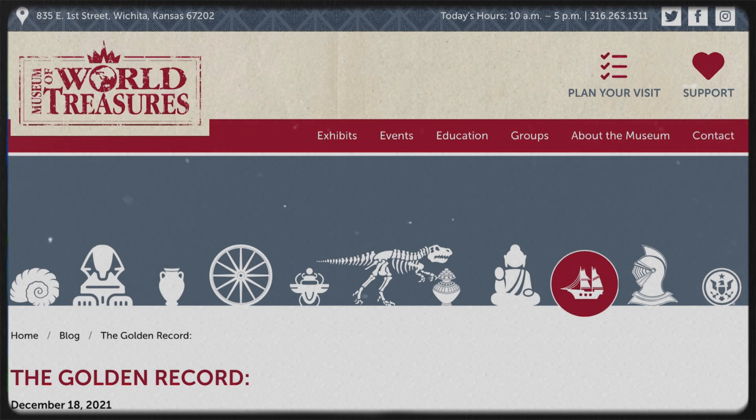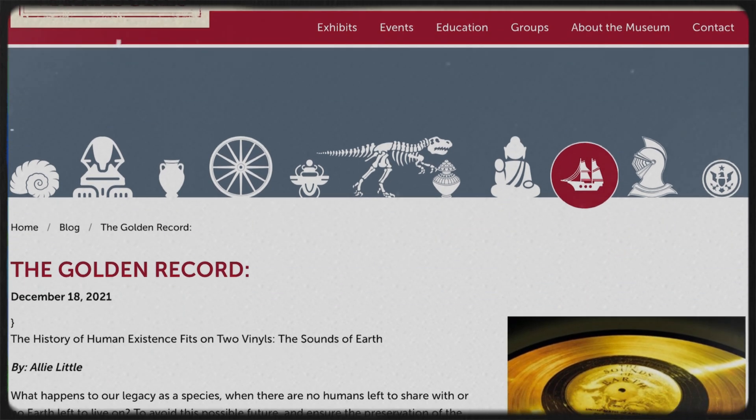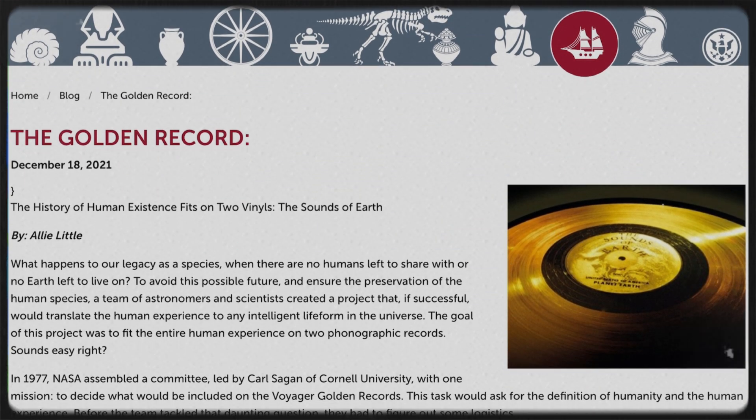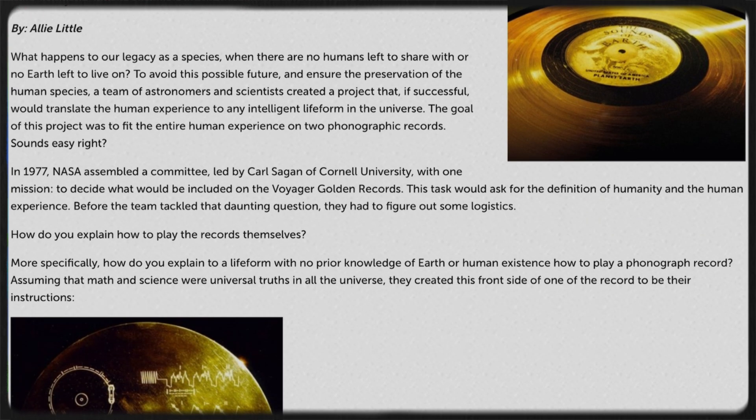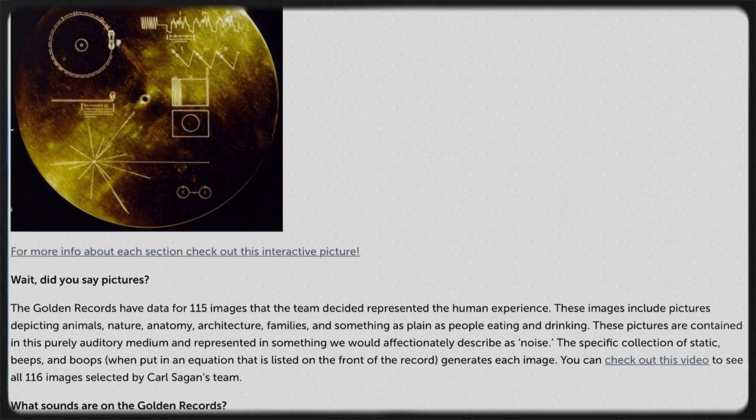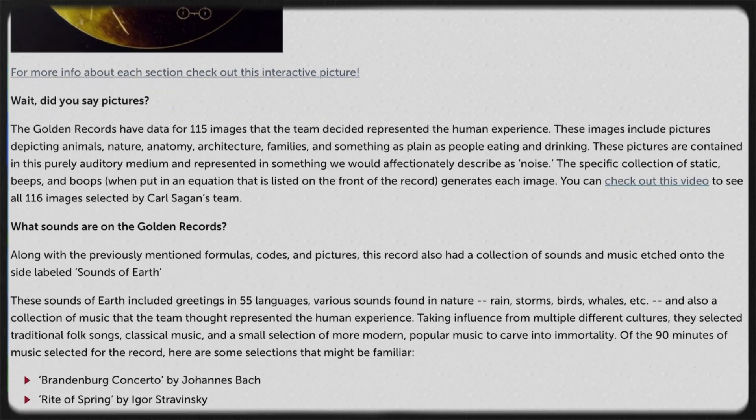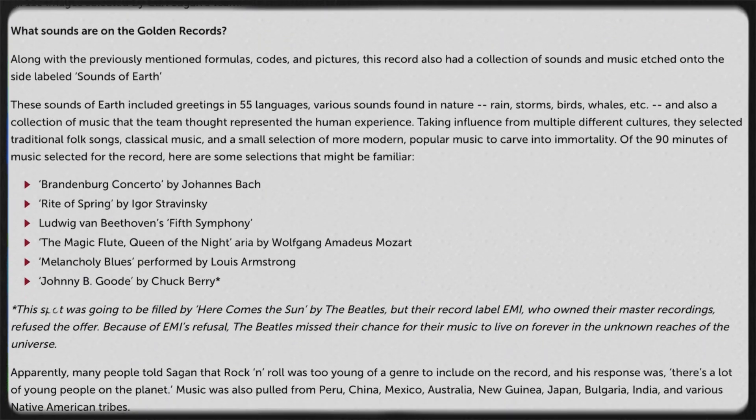The records contain 90 minutes of music, including Bach's Brandenburg Concerto No. 2, and Chuck Berry's Johnny B. Goode, along with images of children, dolphins, dancers, sunsets, and sounds like crickets, rain, and a mother kissing her child.